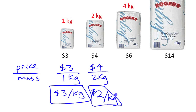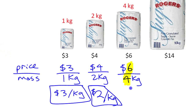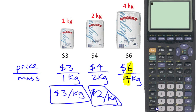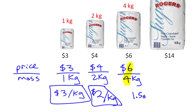So far the second bag is cheaper per kilogram because that unit rate is lower. The third bag is six dollars for four kilograms. Divide six by four — on a calculator that gives you 1.5, but since it's money we write it as $1.50. So it's a dollar fifty per kilogram as the unit rate.